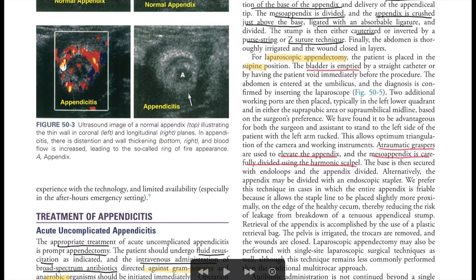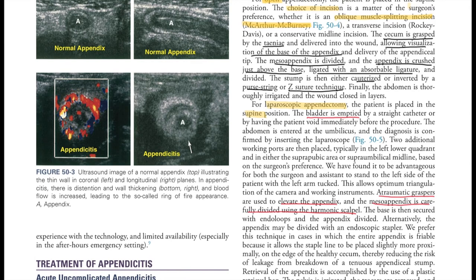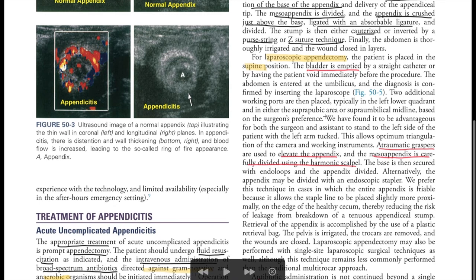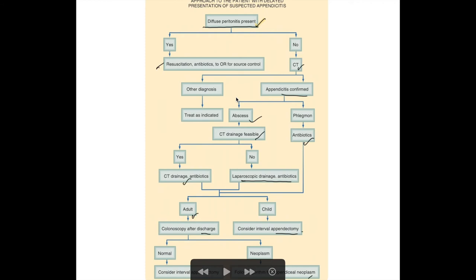Treatment includes IV fluid resuscitation and broad-spectrum antibiotics against gram-negative and anaerobic organisms. For open appendectomy, the McBurney's incision — an oblique muscle-splitting incision — is used. The cecum is grasped and the base of the appendix visualized. The mesoappendix is divided, the appendix crushed just above the base, ligated, and either cauterized or secured with a purse-string suture. For laparoscopic appendectomy, the bladder is emptied first, atraumatic graspers elevate the appendix, and the mesoappendix is divided with the harmonic scalpel.